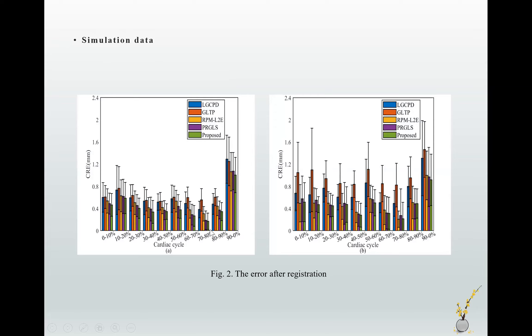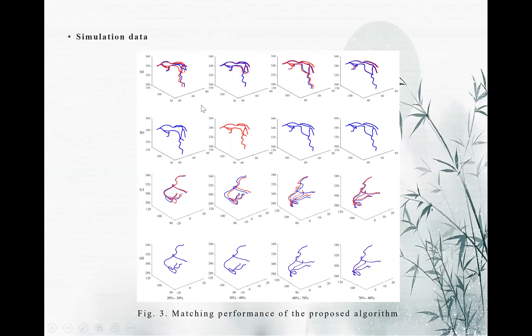This figure shows the performance of our method. The first line is the coronary arteries before the registration. The second line shows the coronary arteries after the registration. We can see that the blue point set and the red point set coincide very well.